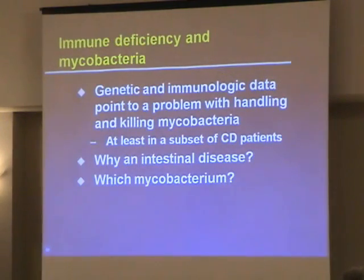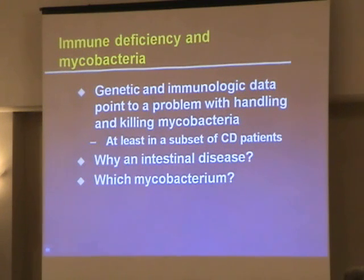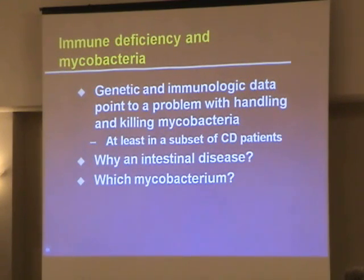At this point, I believe the immune deficiency model not only has more supporting data than the autoimmunity model, but also that the immune deficiency model is compatible with a mycobacterial infection. It doesn't prove a mycobacterial infection — I'm just saying it's not contradictory. It fits with it, and therefore we need to do more work.